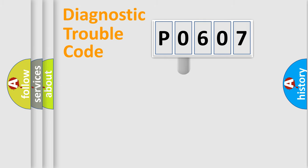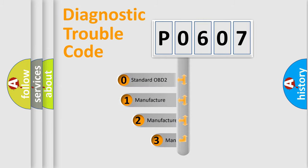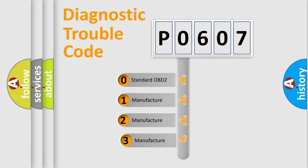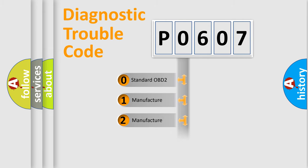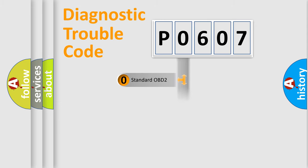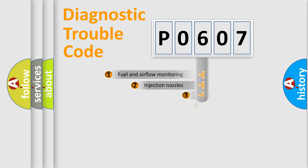This distribution is defined in the first character of the code. If the second character is expressed as zero, it is a standardized error. In the case of numbers 1, 2, or 3, it is a more specific expression of a car-specific error.